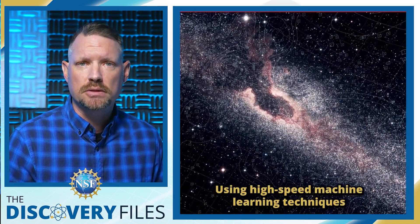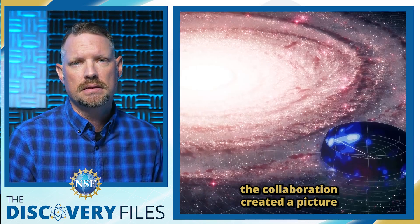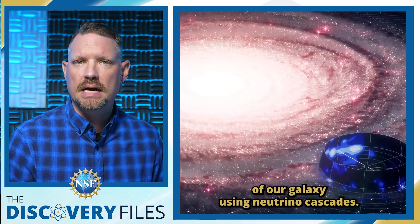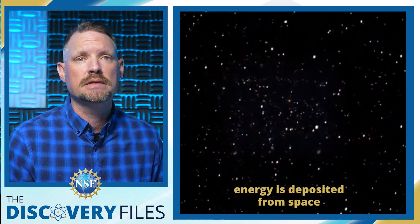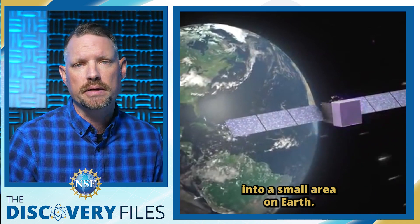Using high-speed machine learning techniques and 10 years of IceCube research data, the collaboration created a picture of our galaxy using neutrino cascades. These occur when most of the neutrinos' energy is deposited from space into a small area on Earth.